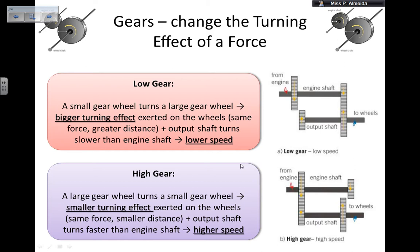If you want to get a higher speed, then you use a high gear. Now in this one, you have a large gear wheel turning a small gear wheel. So here we go, large turning a small one. So what happens here? Now the distance is larger, and here smaller.